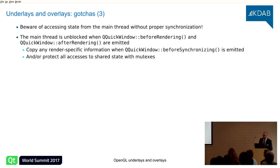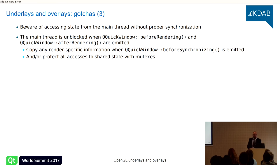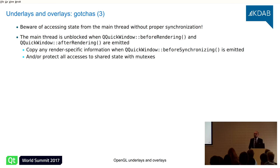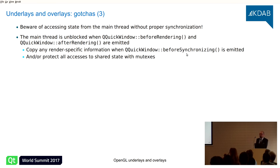The last gotcha: be very aware that the renderer is multi-threaded. Inside your functions, you are not supposed to touch anything from the main thread without proper synchronization. The best way to cope is to do exactly what Qt Quick does — in the synchronization step, copy out all the data from the main thread into the render thread. That makes you safe by definition. Otherwise you need locks everywhere, which is tedious and error-prone. You can do this safely in the beforeSynchronizing slot, when the main thread is stopped.